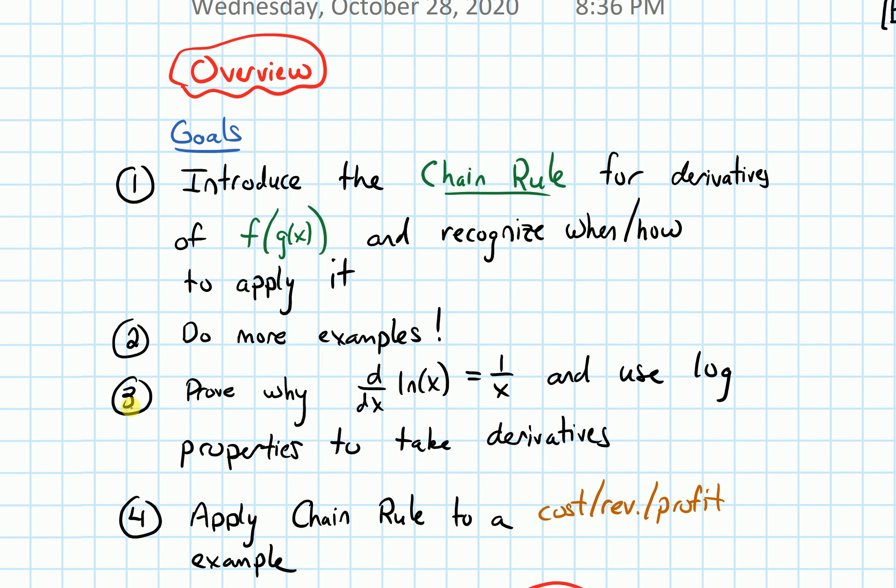After that, we will prove why the derivative of ln of x equals 1 over x, and we'll use log properties to take certain derivatives.